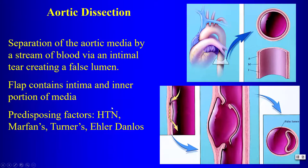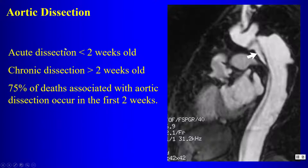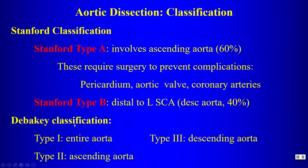Predisposing factors for aortic dissection include hypertension, Marfan's, Turner's, and Ehlers-Danlos syndromes. Dissections are divided into acute (less than two weeks) and chronic (greater than two weeks). Seventy-five percent of deaths associated with aortic dissection occur in the first two weeks. In the Stanford classification, Type A dissection involves the ascending aorta and is treated surgically to prevent complications: extension to the pericardium causing hemopericardium and tamponade, extension to the aortic valve causing acute aortic regurgitation, or extension to the coronary arteries.